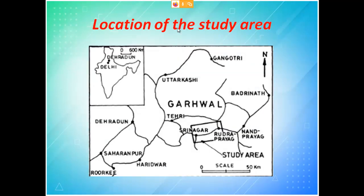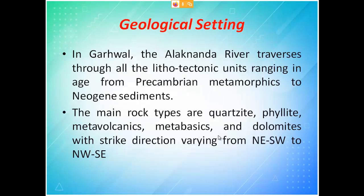This is the study area shown on the map. There is a small rectangular box indicating the study area, which is located slightly above Delhi. Rivers flowing through the region are visible. In the Garhwal area, a river flowing through the region is also a cause for landslides.